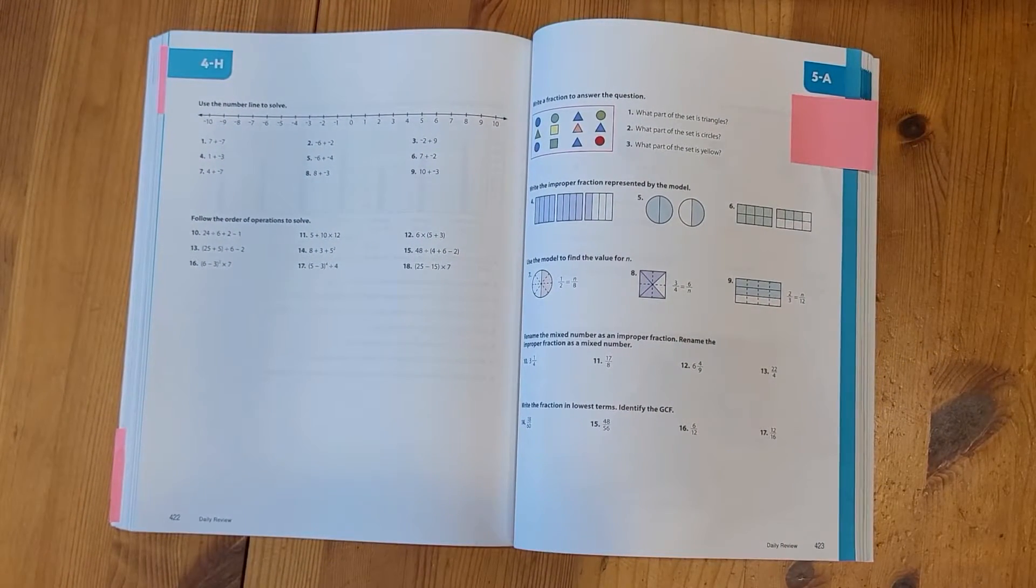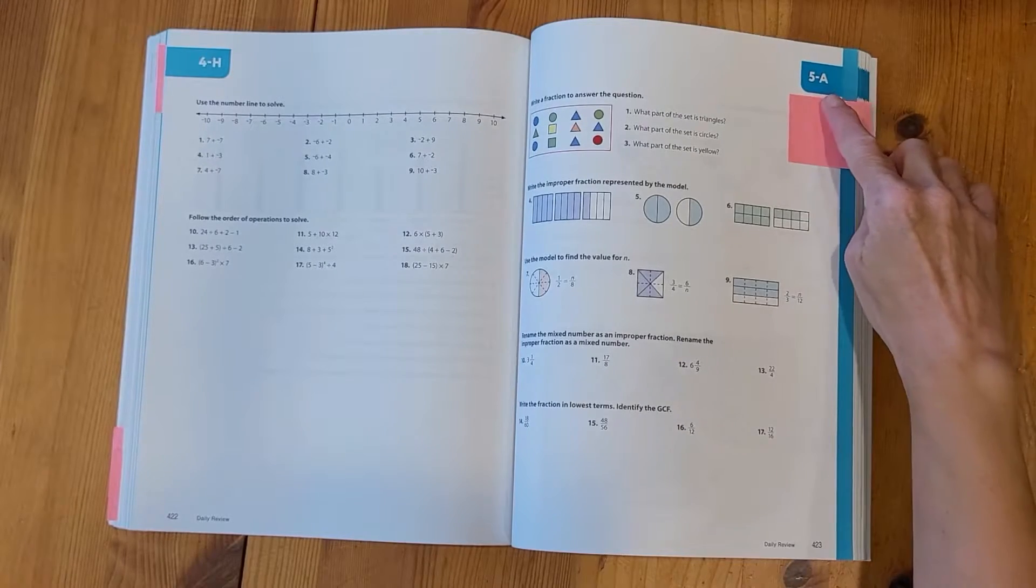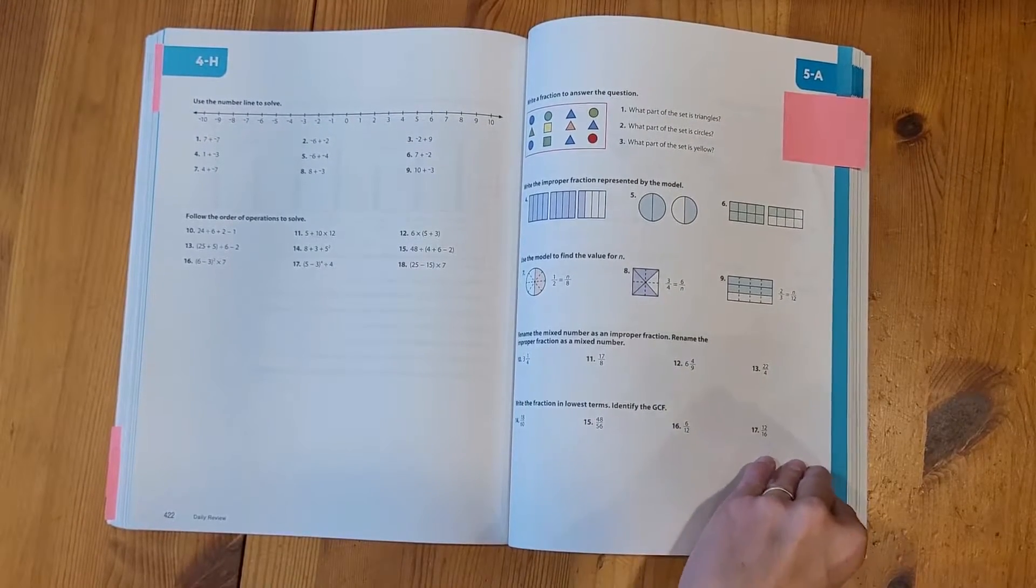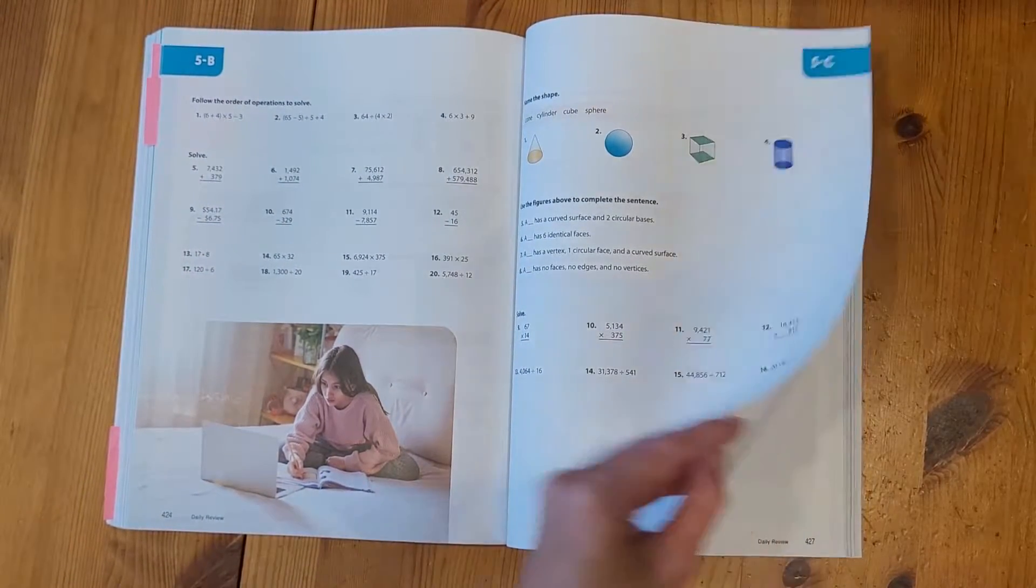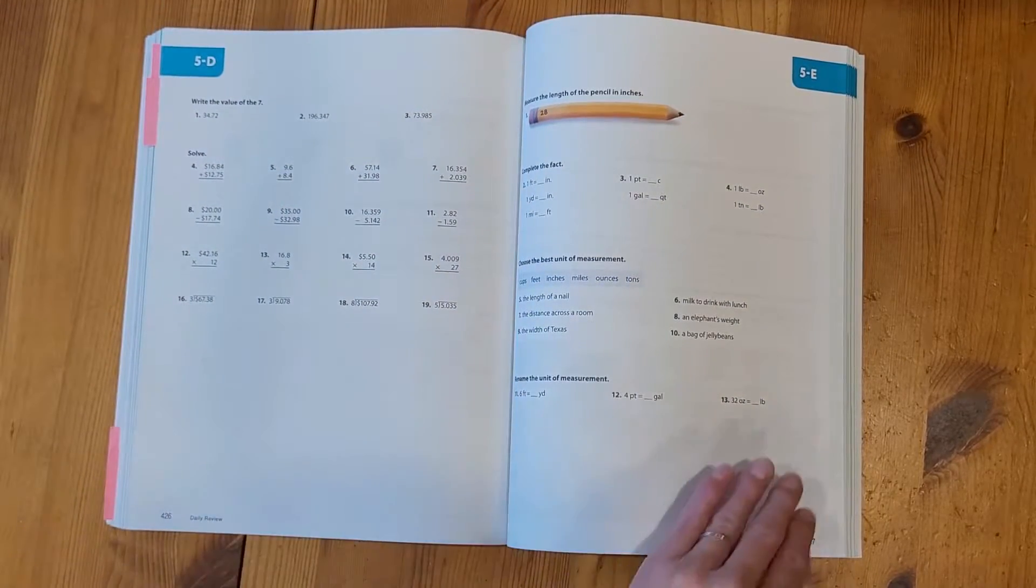And on day 1 of chapter 5, I would be doing review 5A. And then the next day, I would be doing 5B. And then this is where you would find all of your daily reviews.